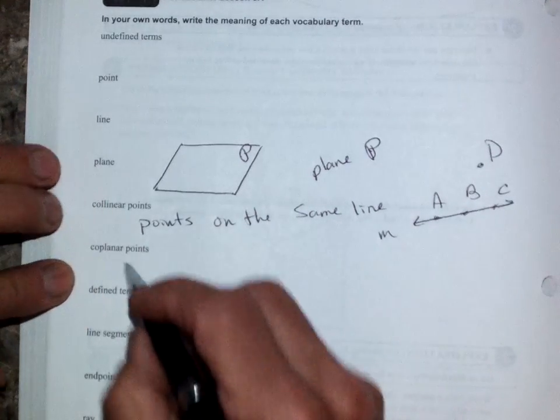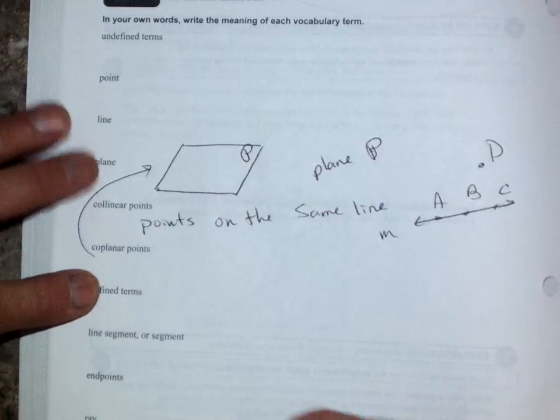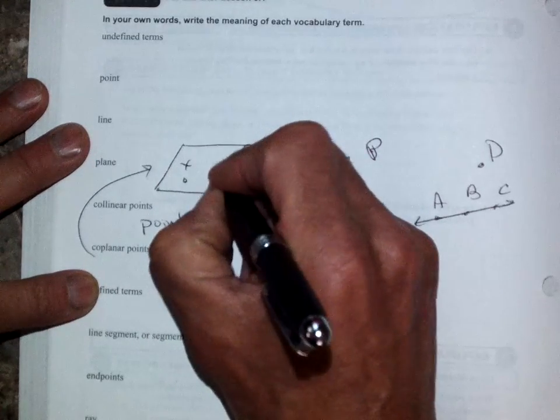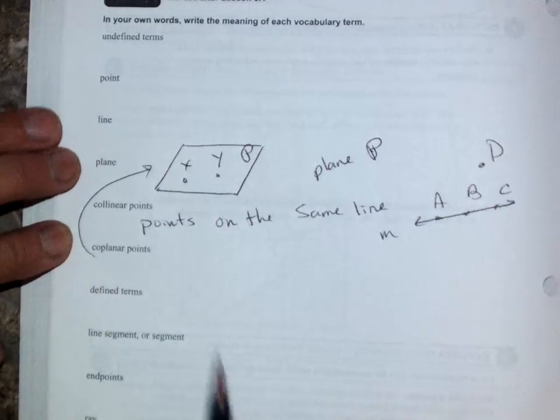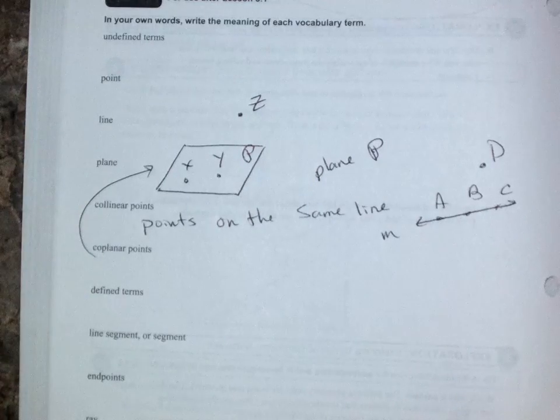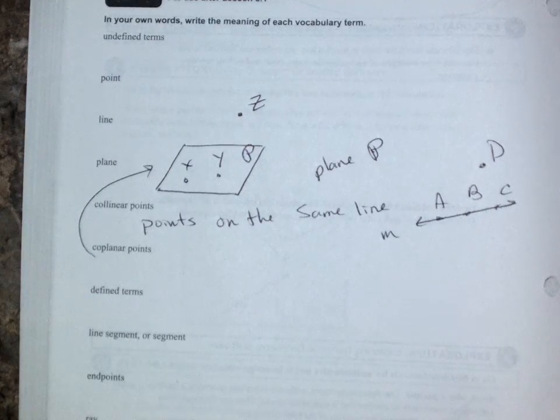Coplanar. Okay. So let's take a look at my plane up here. Points on the same line. Like say point X and point Y. Those are coplanar because they're on the point. Maybe if I had some point way up here above, like Z, that would not be okay.